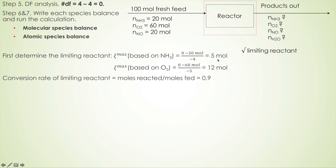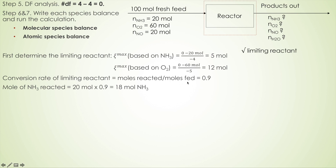Because ammonia is the limiting reactant and the conversion rate of the limiting reaction equals 0.9, we know that conversion rate equals moles reacted divided by moles fed. So moles of ammonia reacted equals 20 moles fed times 0.9, giving 18 moles of ammonia reacted. Therefore, the moles of ammonia in the output stream is 20 minus 18, which equals 2 moles of unreacted ammonia.